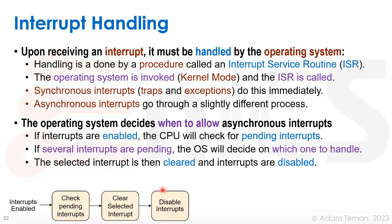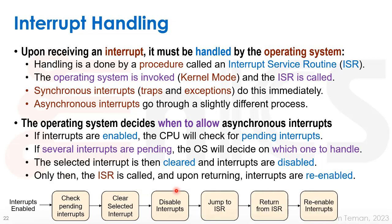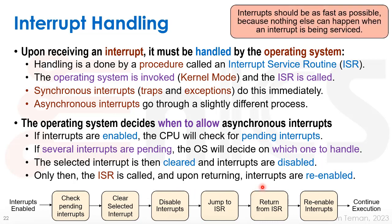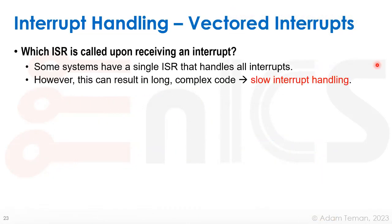After selecting and clearing the interrupt, the CPU disables all other interrupts so another one won't come in while handling this one. Then it jumps to the Interrupt Service Routine, handles the interrupt, returns from the ISR, and only then re-enables interrupts and continues execution. During the window between disabling and re-enabling interrupts, nothing else can interrupt — so ISRs should be kept short, doing the minimum necessary at user level, then returning from the ISR and letting a process handle the rest.